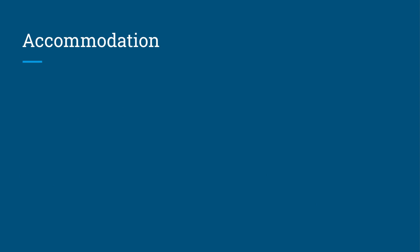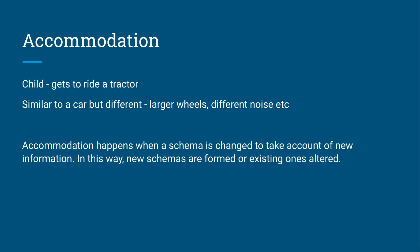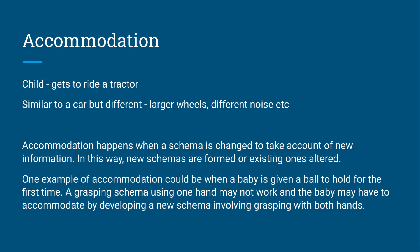The other concept Piaget came up with was accommodation. Next, the same child gets to ride a tractor. Now this is similar to a car but it's different - it's got larger wheels and it makes a much different noise to a car. Accommodation happens when a schema is changed to take account of new information. Sometimes new schemas are formed or existing ones have to be altered. So this child may have to make a whole new schema for a tractor. They've got a car schema, and now they have a tractor schema as well.